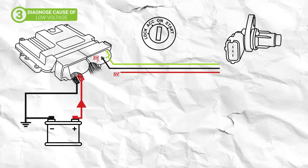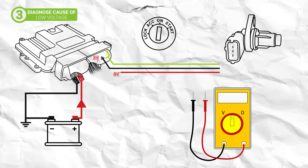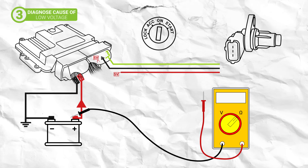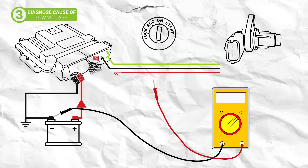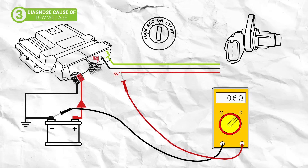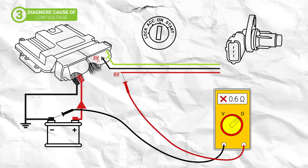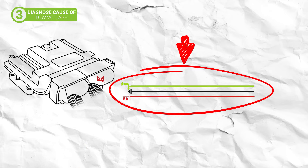To rule out the loom, set your multimeter to ohms and perform a continuity test between the negative side of the battery and the affected wire. As this wire has been removed from the terminal, there should be no resistance whatsoever between it and the battery ground. So if there is any resistance displayed, then there is a short present in the loom, which will need to be repaired as well as the ECU.